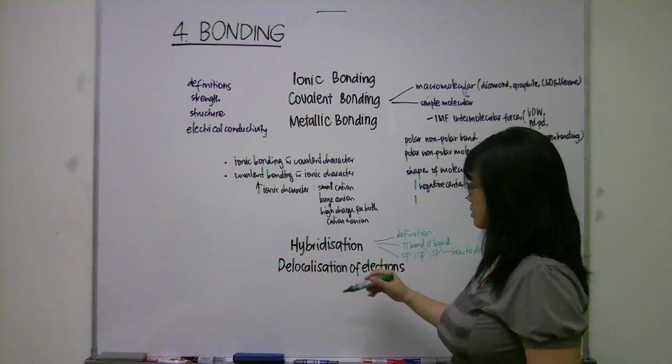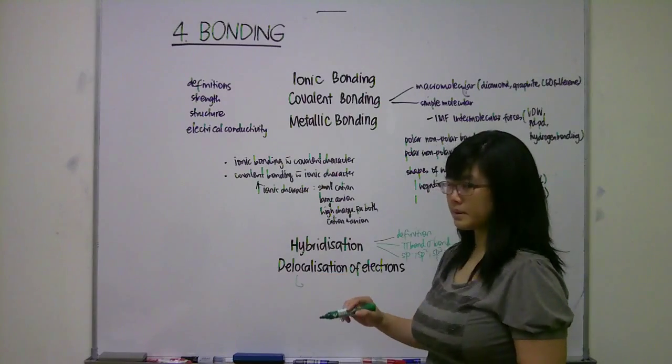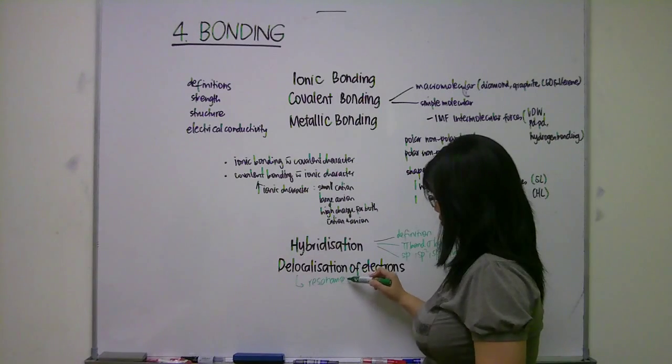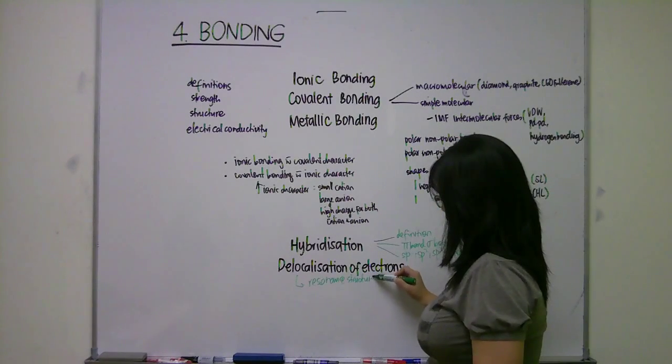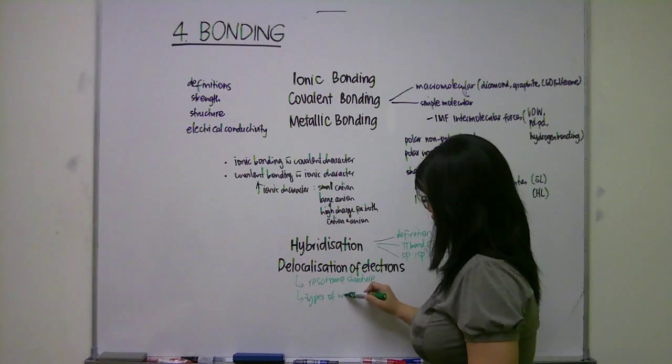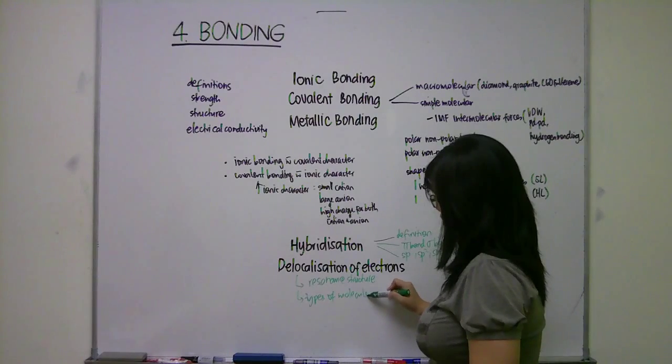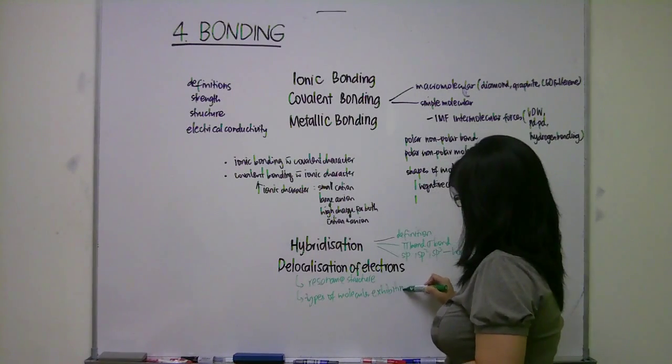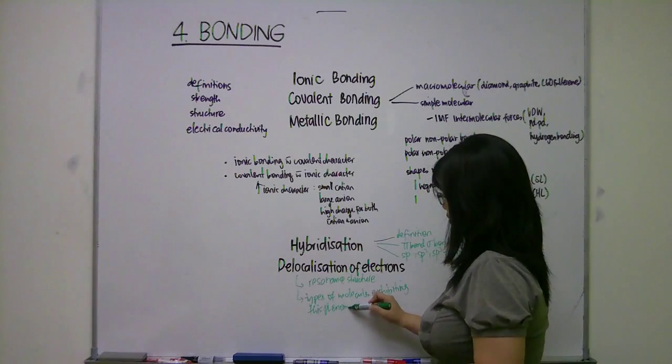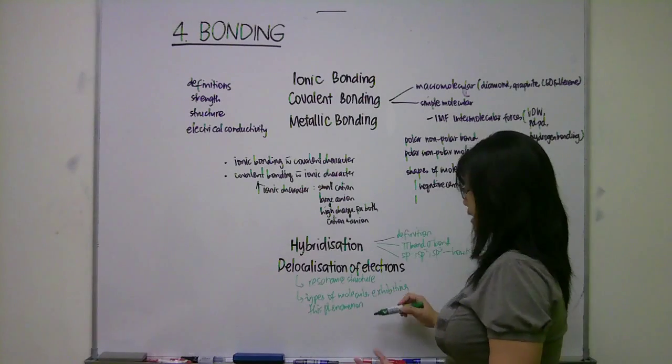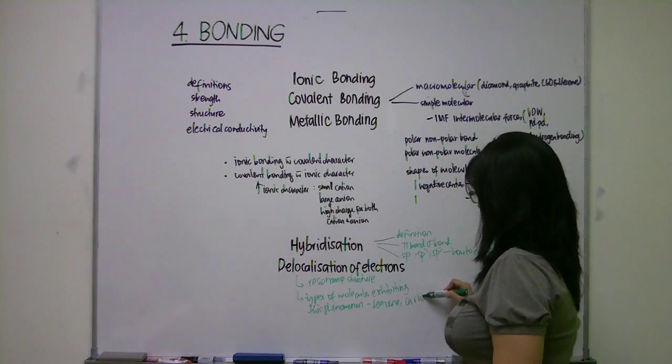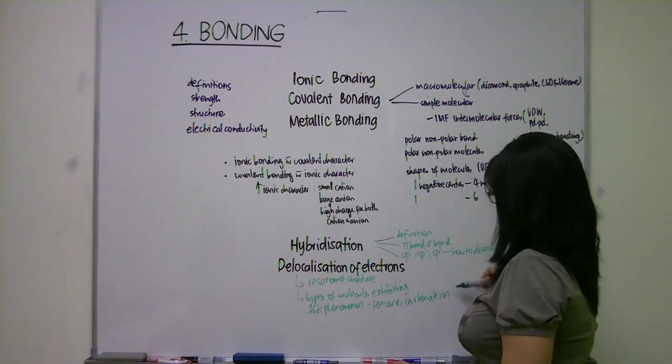And the delocalization of electrons will require you to explain about resonance structure and types of molecules exhibiting this, for example, benzene, carbonate ion, and so on.